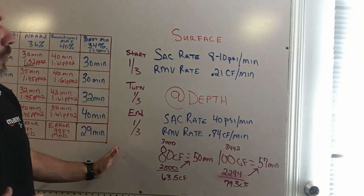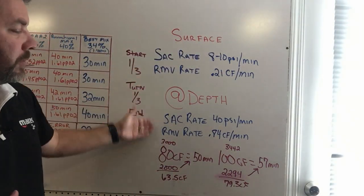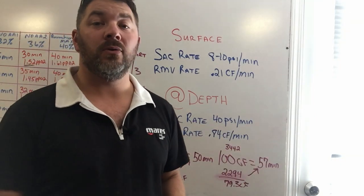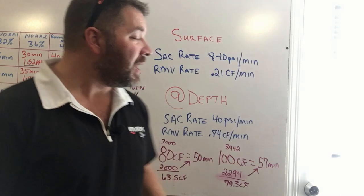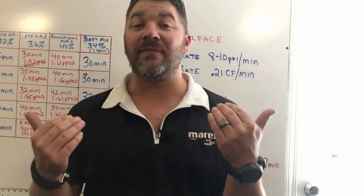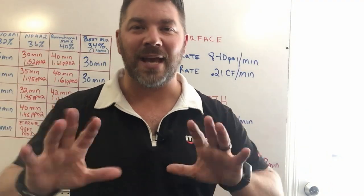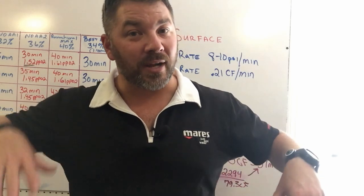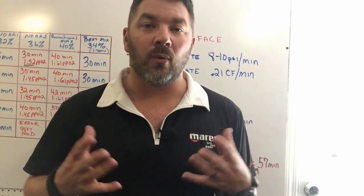Based off the rule of thirds, my personal SAC and RMV rate, what it would be at depth, between the 80 and the 100 I'm probably going to be going with a 100 cubic foot cylinder. Now typically speaking I would actually dive double 80s, not doubles on my back, you guys know I don't personally like that, but I dive double 80s side mount so I've got a cylinder here and a cylinder here.